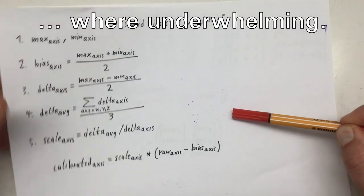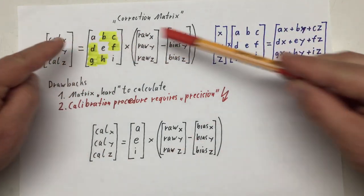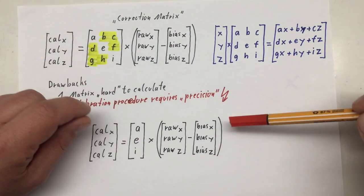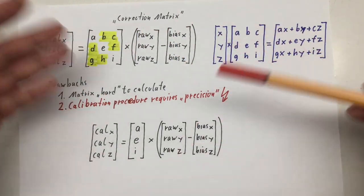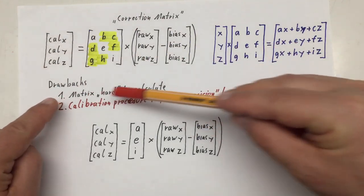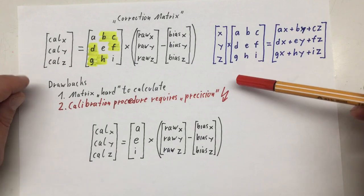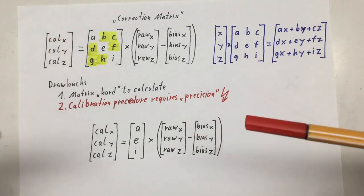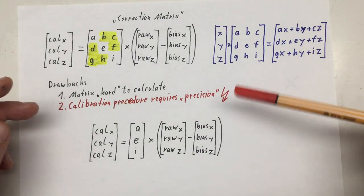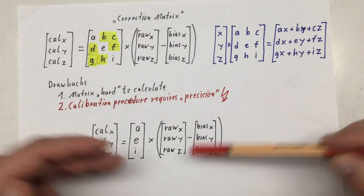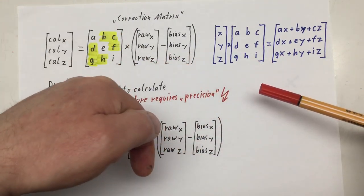Since the results of the scale biases method of calibration, or how I like to call it the min max method, because it only takes the minimum and maximum values for each axis into account, we will start this time by implementing the full method here, the correction matrix.